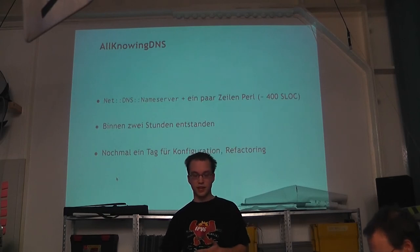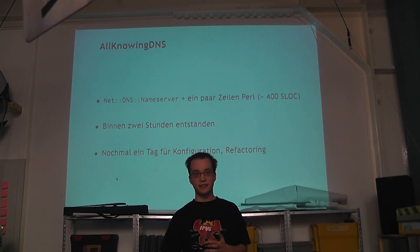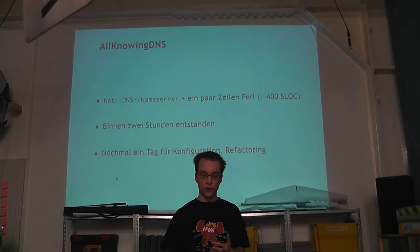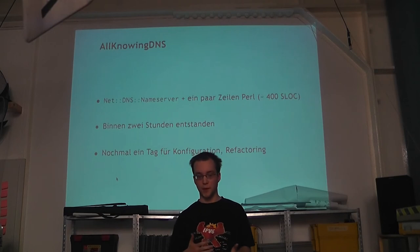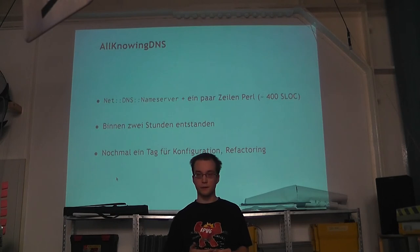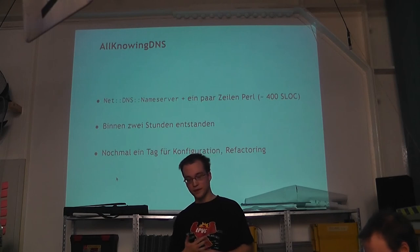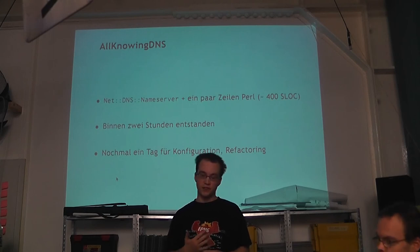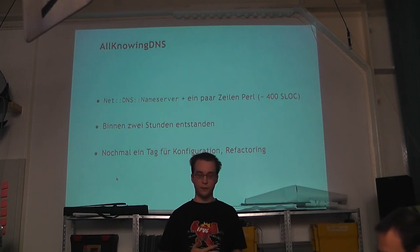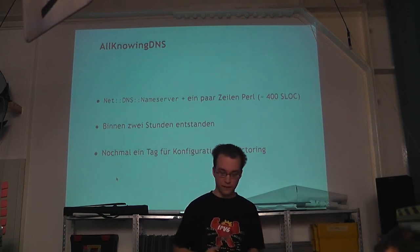That's why I decided to write something myself. The result is called All-Knowing-DNS. It is essentially a few lines of Perl code that implement the required handling around the existing module net-dns-nameserver. It's fewer than 400 source lines of code including configuration. If you leave out all the config boilerplate, proper error messages, privilege dropping, and such, it's fewer than 100 lines of code. So it's really very little, and it came together within two hours, with another day for configuration and refactoring, and another day for packaging.